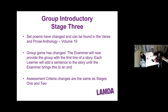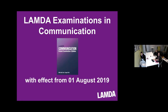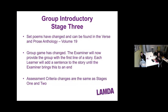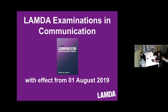The examiner will provide the group with the first line of a story — it could be 'Once upon a time' or 'In a land far far away' — and then learners will each have an opportunity to add to that, creating a new story around it. The assessment criteria remain the same for Stages 1 and 2, so for the introductory level there isn't too much changing — just a few additions to the conversation element and the change of game for Stage 3 group.